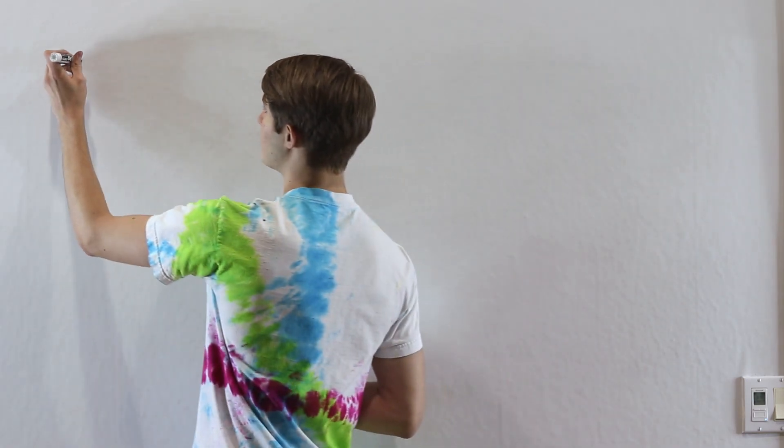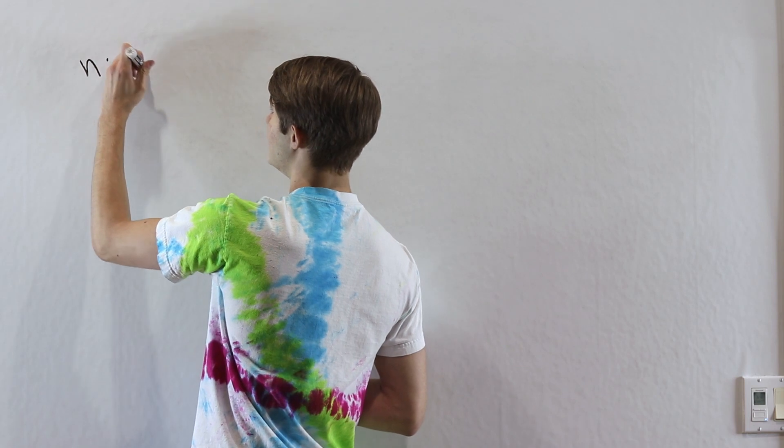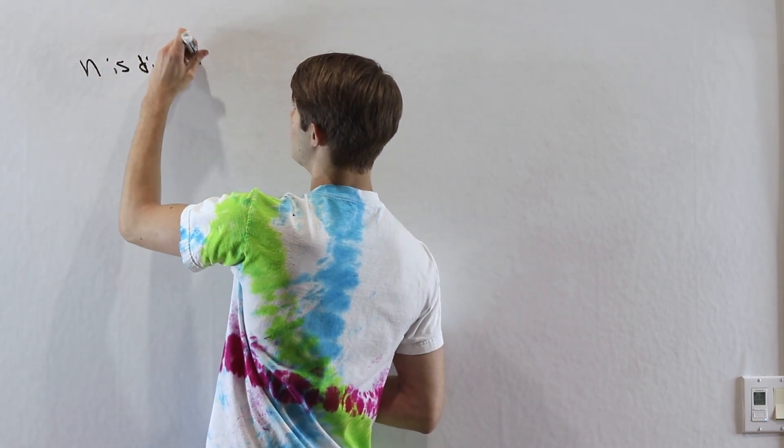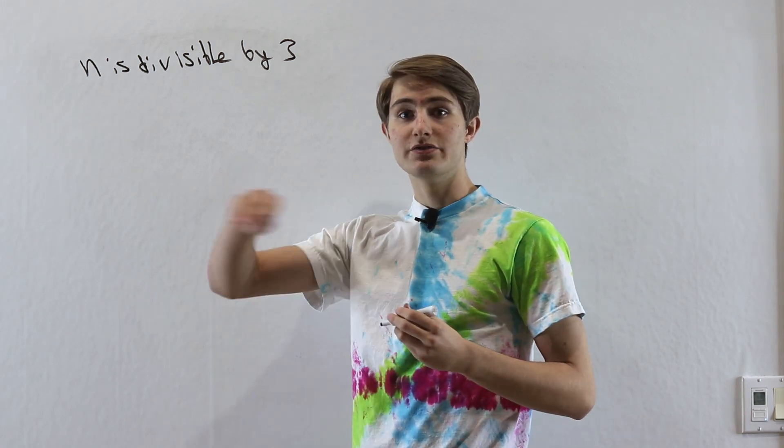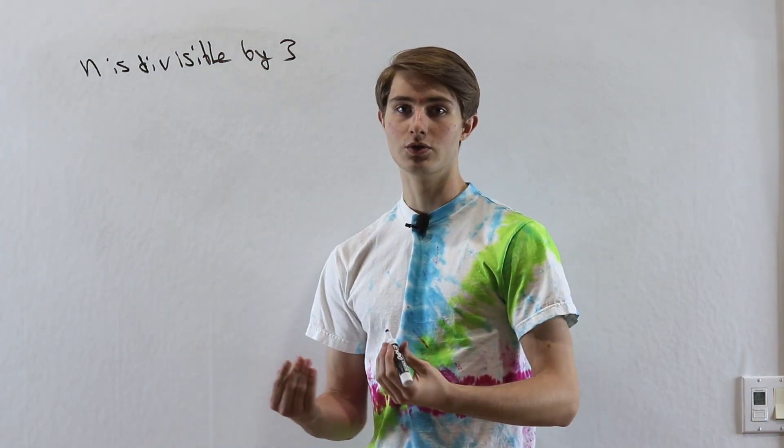In order to do that, we need to start out by understanding what exactly it means for a number to be divisible by another number. If we say, for example, that n is divisible by 3, what we're saying is that if we take n and then divide it by 3, we'll get a whole number.